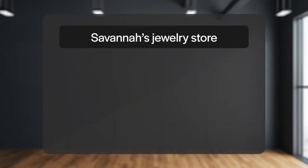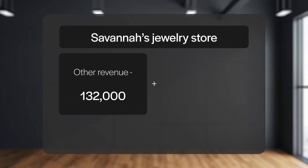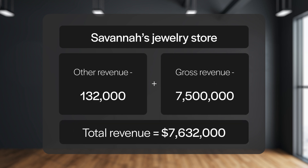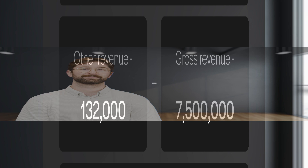For Savannah's jewelry shop, they earn $132,000 from other revenue. Inputting all the numbers into the formula will give you a total gross revenue of $7,632,000.